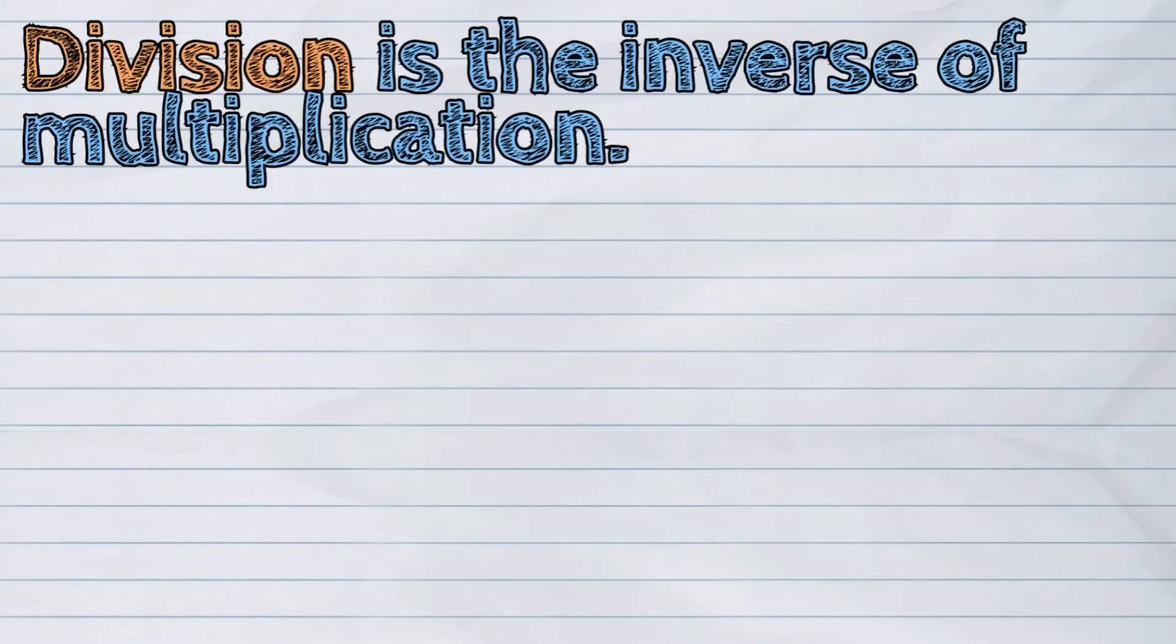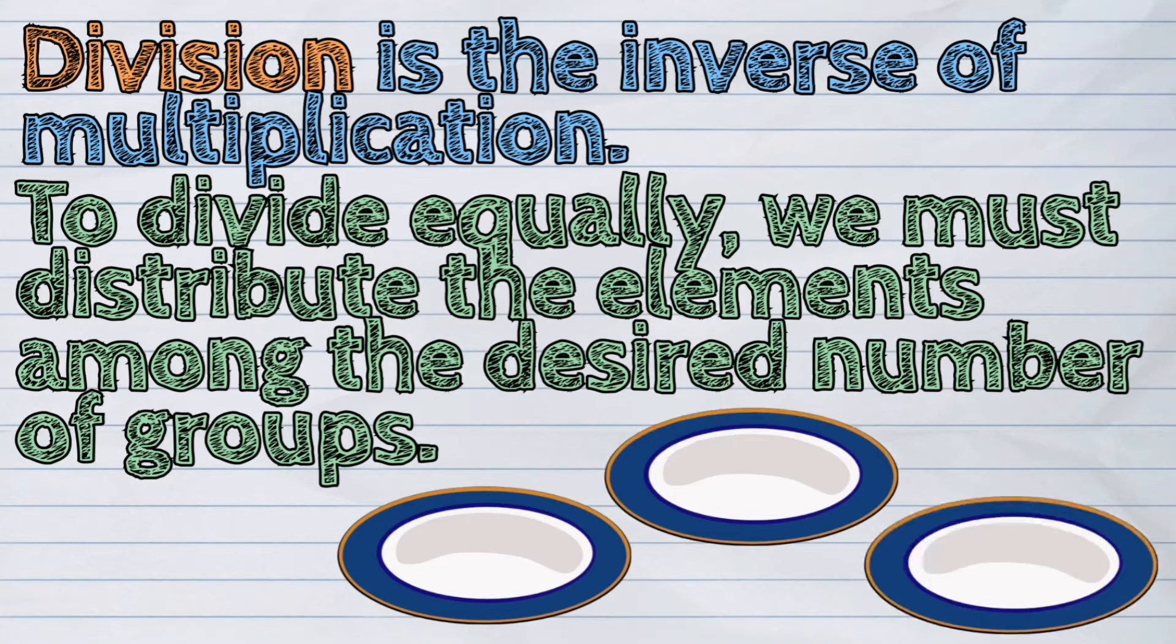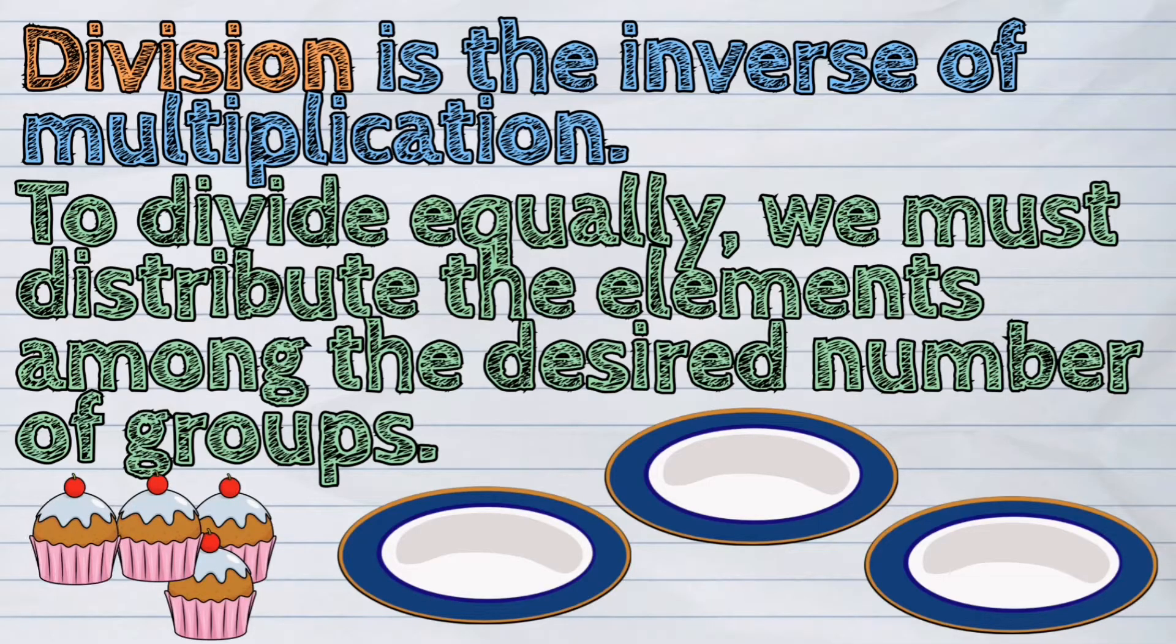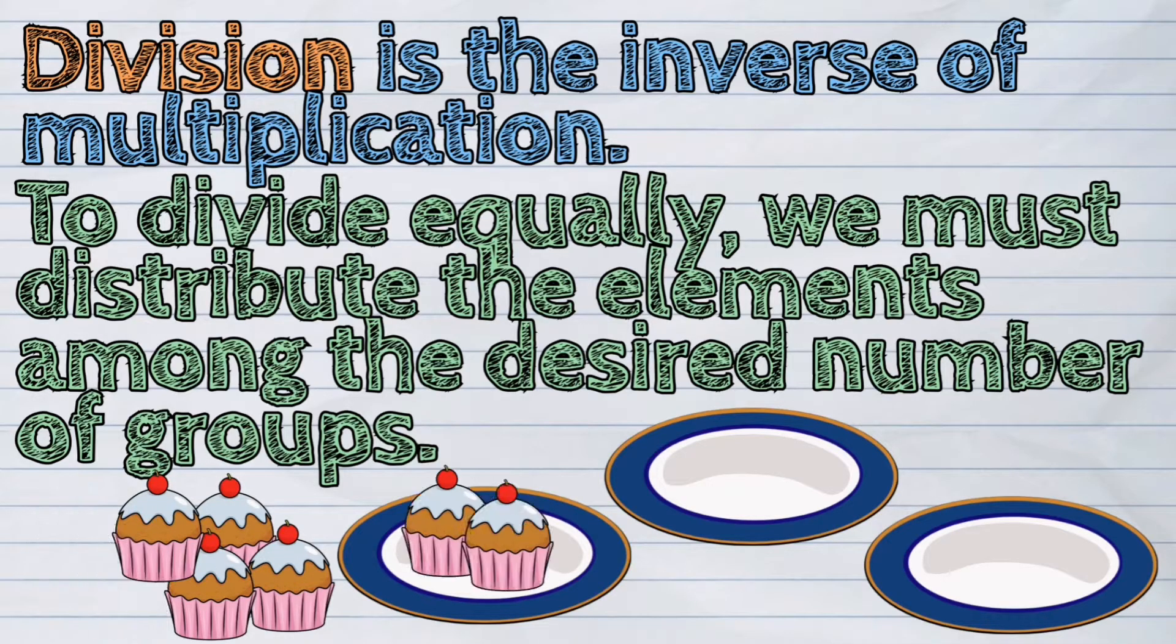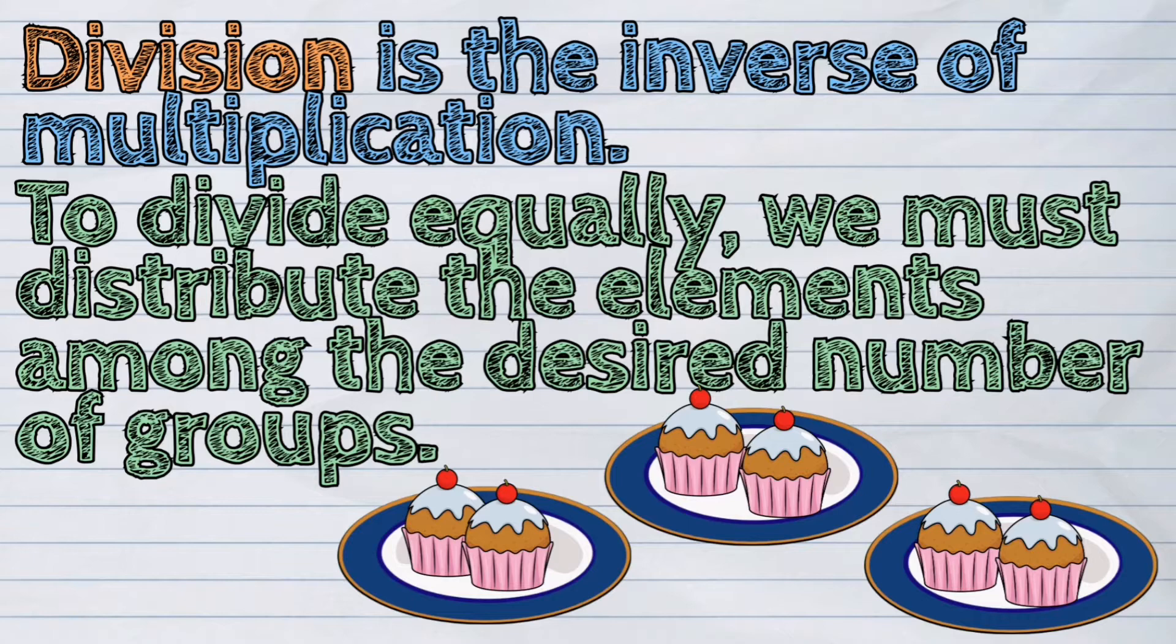Division is the inverse of multiplication. To divide equally, we must distribute the elements among the desired number of groups.